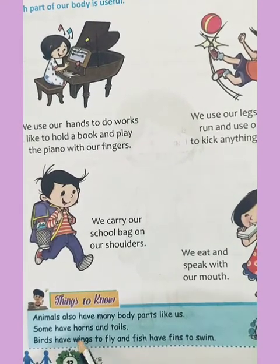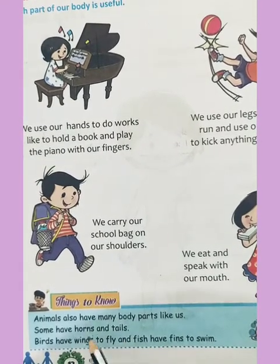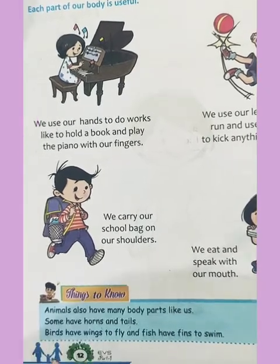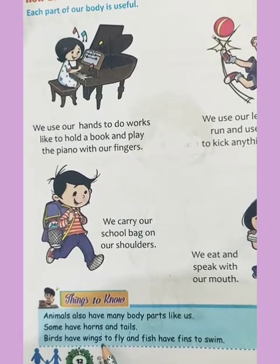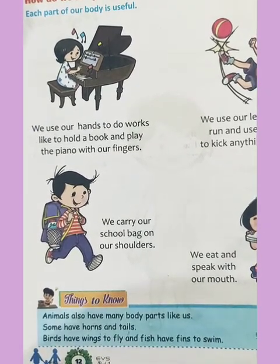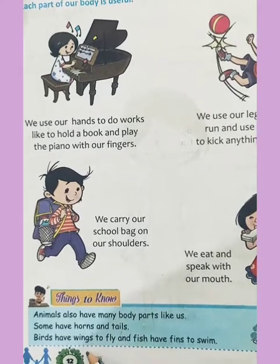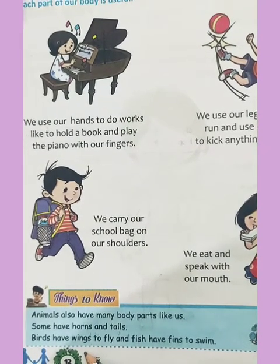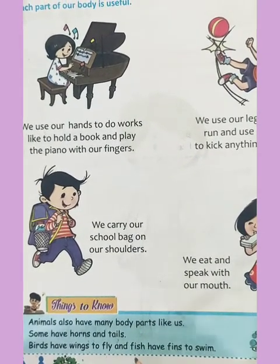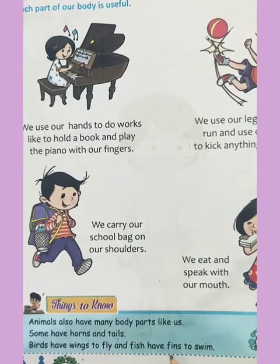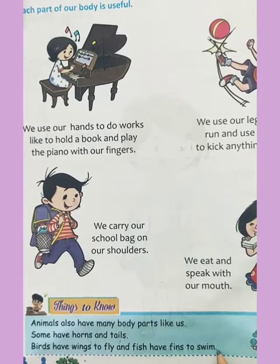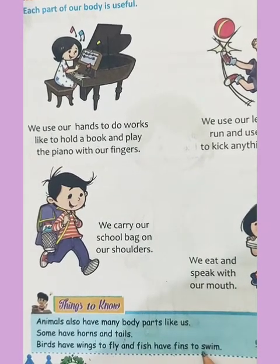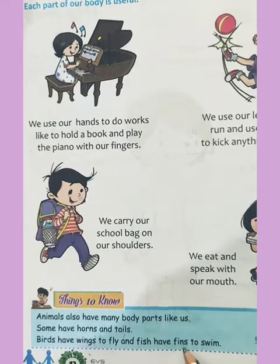Some animals have horns and tails. And birds have wings to fly — wings are a body part which they use to fly. And fish have fins to swim — fish can swim with the help of fins.